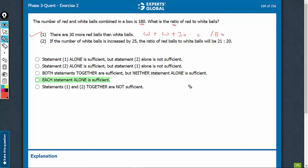Look at statement 2. I know W upon 180 minus W is what it is, the current ratio, and then it says that if the number of white balls is increased by 25...